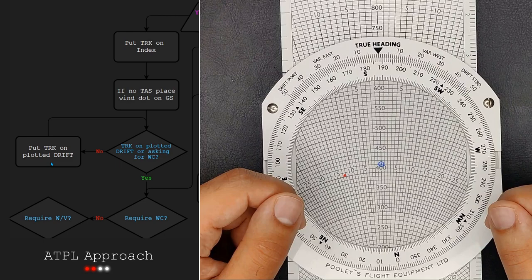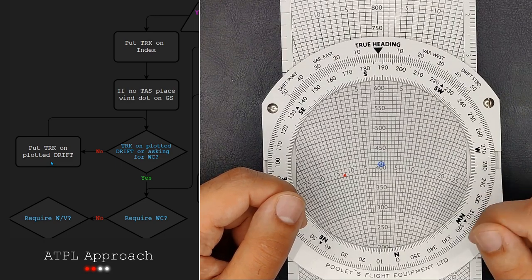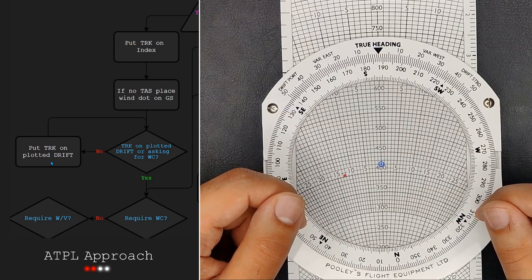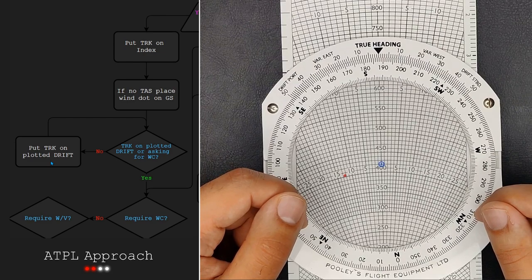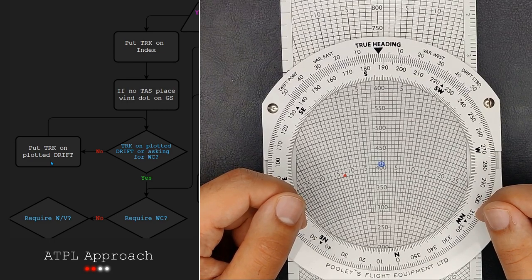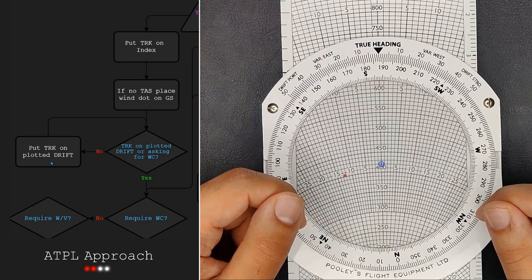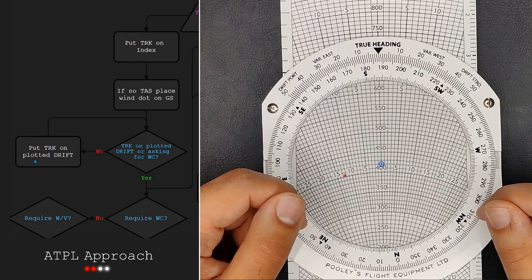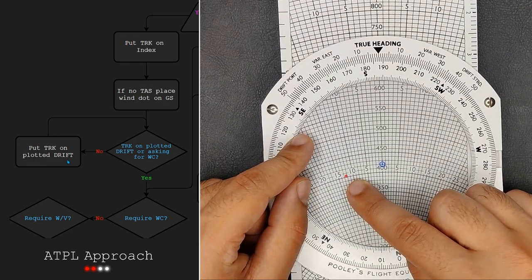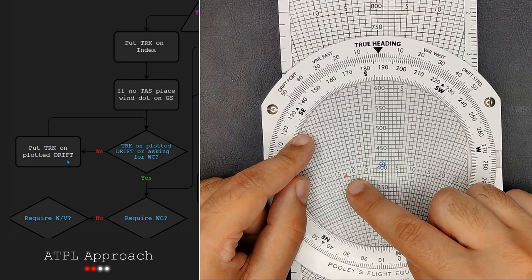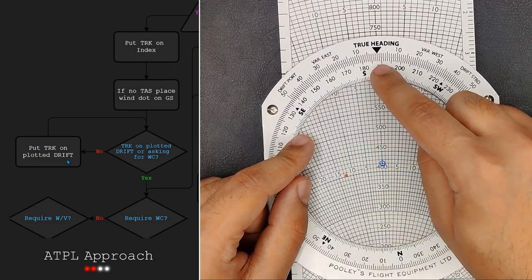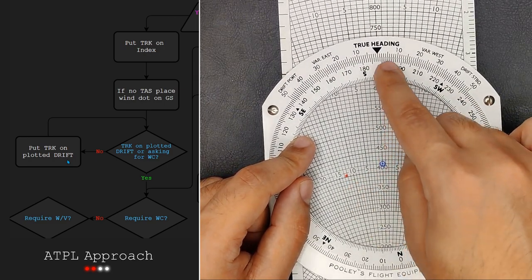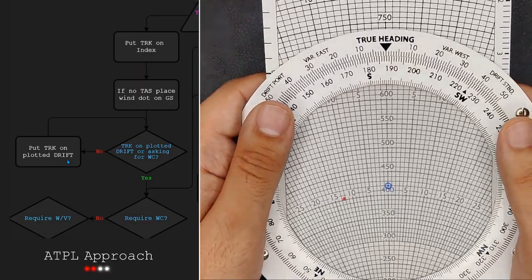Just like how our track is our estimate for our heading, our ground speed and drift are also not going to be completely correct. We therefore expect them to change. We now do what the process says and put our track of 188 degrees underneath what the plotted drift right now is telling us. It tells us it's 12 and a half degrees so I'll line the 188 with the 12 and a half degrees. This is to the left so we'll do it to the left.